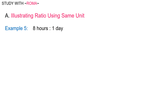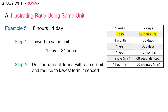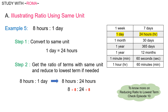Let's try examples on units of time. Example number 5: 8 hours is to 1 day. Step 1: convert to the same unit using the conversion table. Find hour and day. We have 1 day is equal to 24 hours. Step 2: get the ratio of terms with the same unit and reduce to lowest term if needed. 8 hours is to 1 day will be 8 hours is to 24 hours. The greatest common factor of 8 and 24 is 8. So divide both sides by 8: 8 divided by 8 is to 24 divided by 8, which is equal to 1 is to 3.